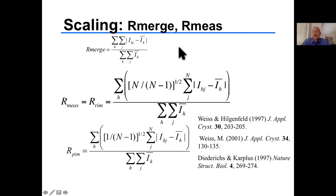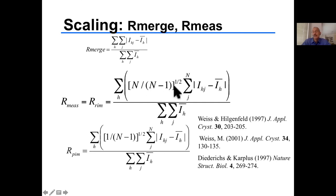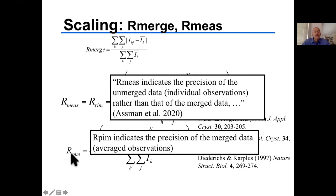Now we have done scaling, rejections, and sigma validation and can look at the R-factors. The old R-merge measures how far things vary from the average (unweighted). R-measured (redundancy-independent merging R-factor) weights by multiplicity: √(n/(n-1)) times the standard deviation. PIM (precision-independent merging R-factor) gives the precision of the merged data using 1/(n-1). R-measured indicates precision of unmerged data; PIM indicates precision of merged data.